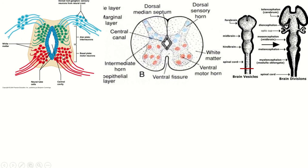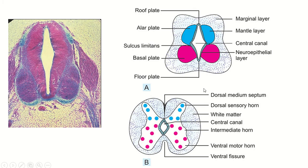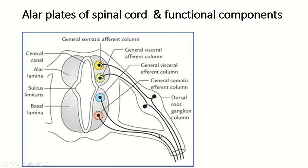Ventral horns are derived from the basal plate. In the adult cross-section of the spinal cord, the alar plate gives rise to the dorsal horn, the basal plate gives rise to the ventral horn, and the marginal zone forms the white matter. Now we consider the functional components of the alar plate of the spinal cord.